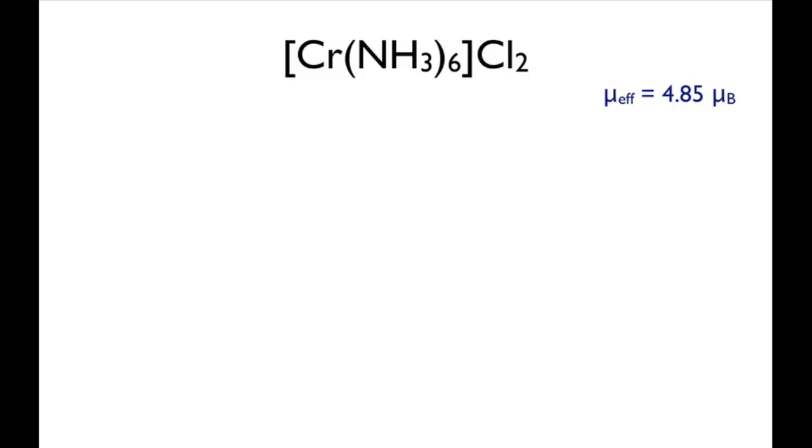The first step is to determine the oxidation state of the chromium in the complex and hence its valence electronic configuration. The complex cation has a 2-plus charge and the chromium centre is coordinated to six neutral ammonia ligands. It's therefore a chromium 2 complex.